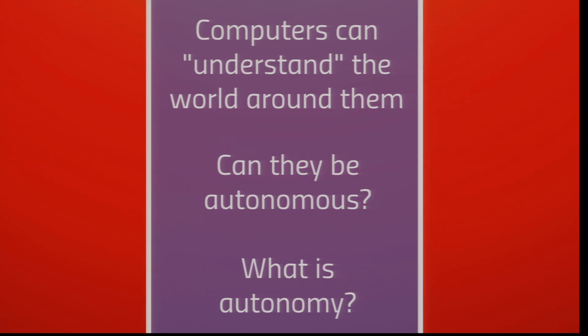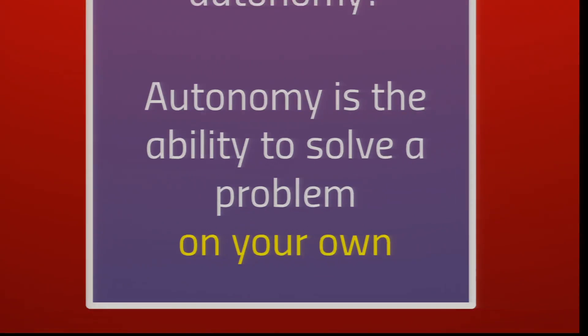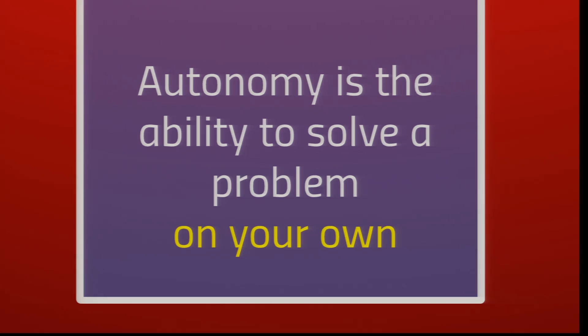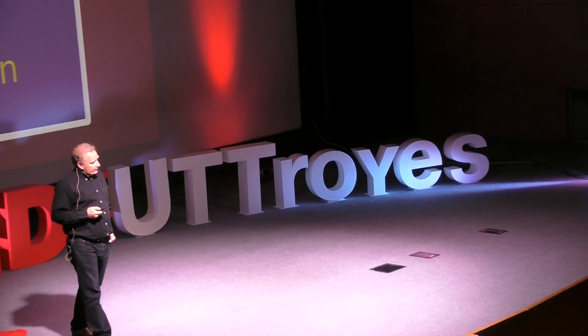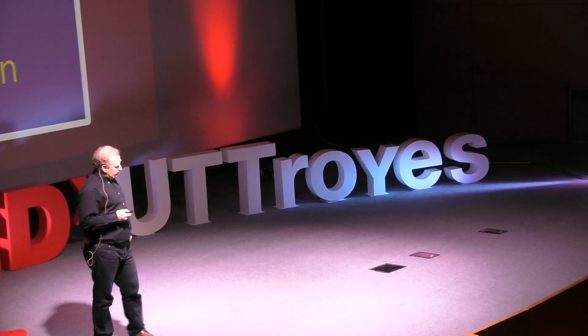What is missing in order to get an autonomous computer is the ability for a computer to find solutions on its own to problems that have appeared. One definition of autonomy could be the ability to solve a problem on your own — and it's here that artificial evolution comes in.